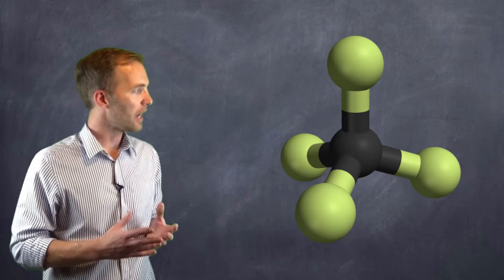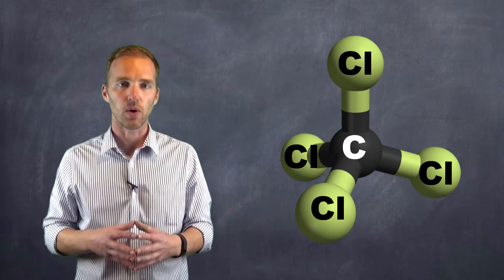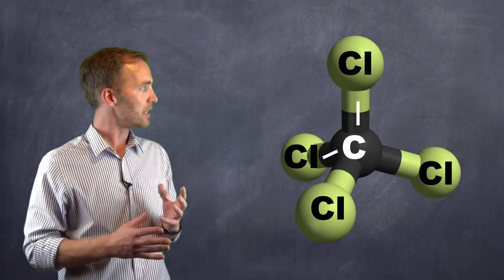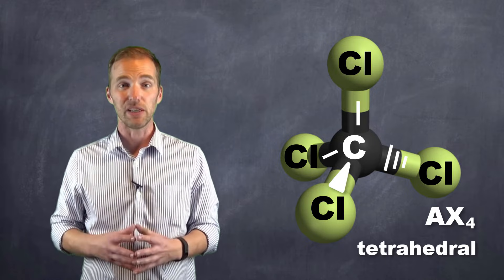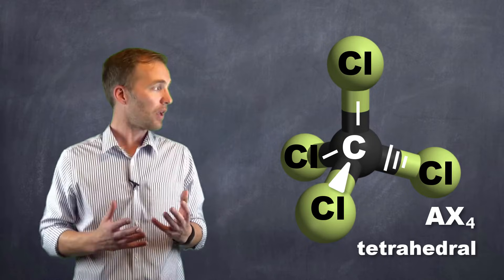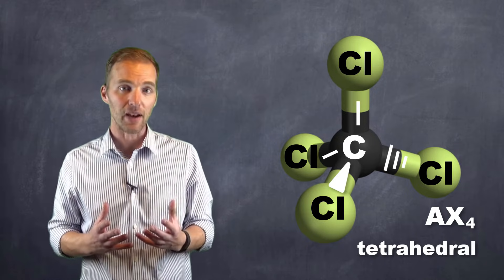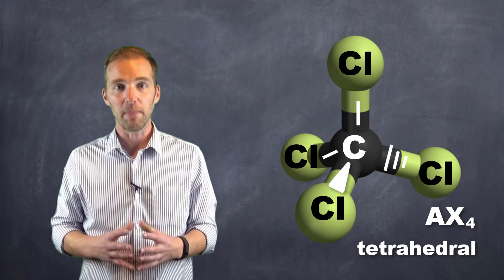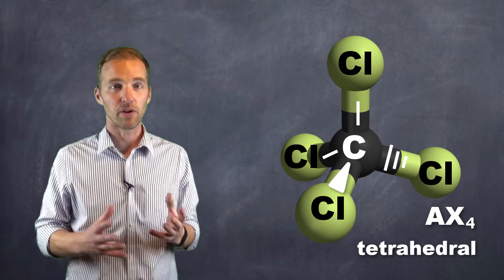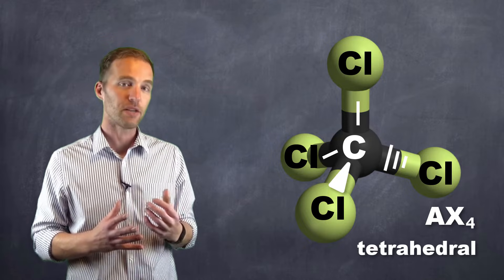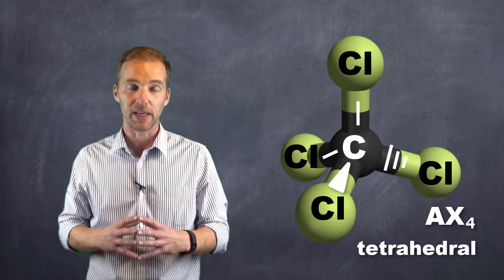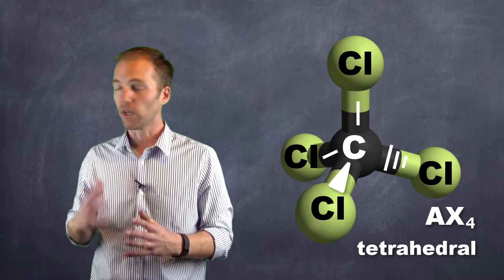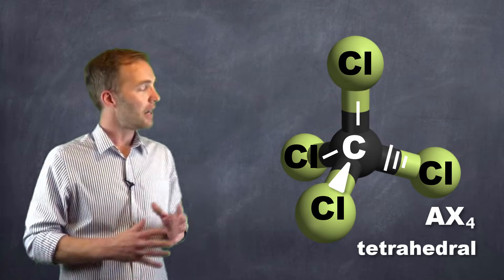But if we take a look on the other hand at, say, this molecule, which is carbon tetrachloride, we can see that this is an AX4 class tetrahedral molecule. Both of the molecule examples that we've taken a look at have the same number of electron domains. It's just that our electron domain geometry is a little bit different with this one, because all of the electron domains possess bonded pairs of electrons, while there's one lone pair with ammonia.